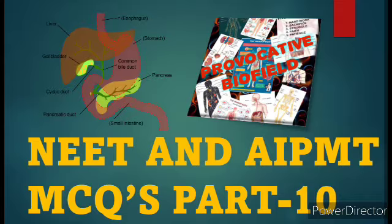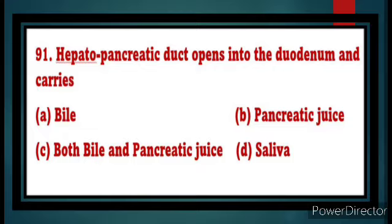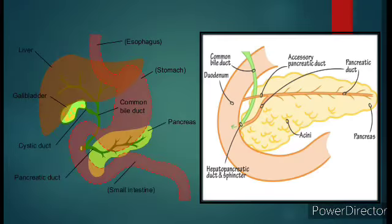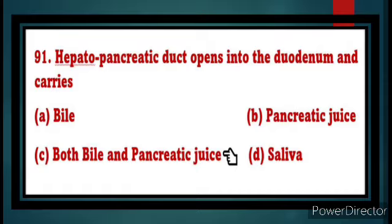Let's start the 10th set of questions. Question number 91: Hepatopancreatic duct opens into the duodenum and carries dash. Hepato means liver, pancreatic denotes pancreas. The duct from the liver is called common bile duct, which carries bile juice. The duct from the pancreas is called pancreatic duct, which carries pancreatic juice. This common bile duct and pancreatic duct combine to form the hepatopancreatic duct, which contains both bile juice and pancreatic juice. The answer is option C.